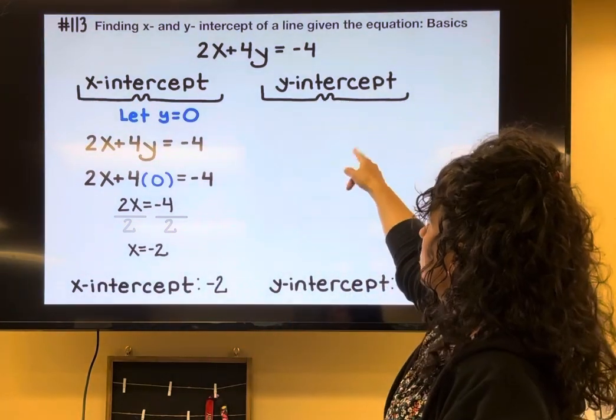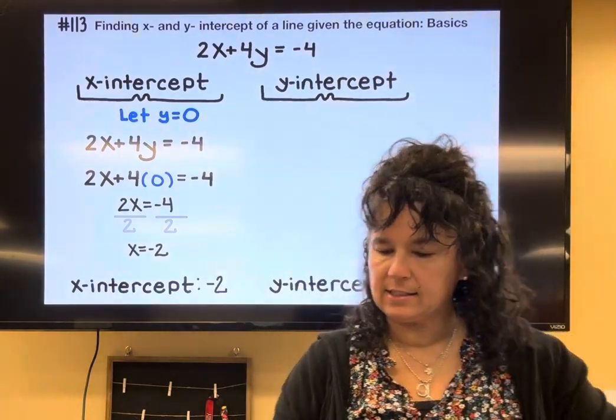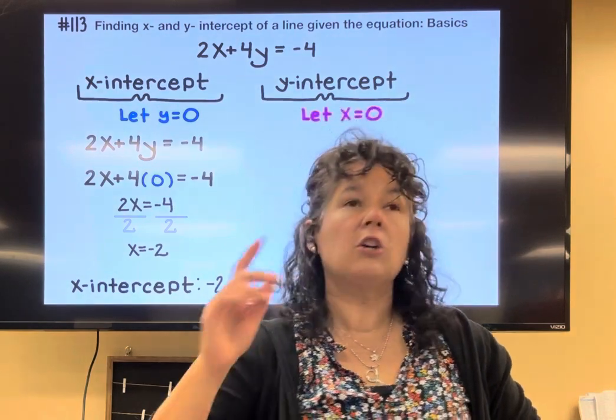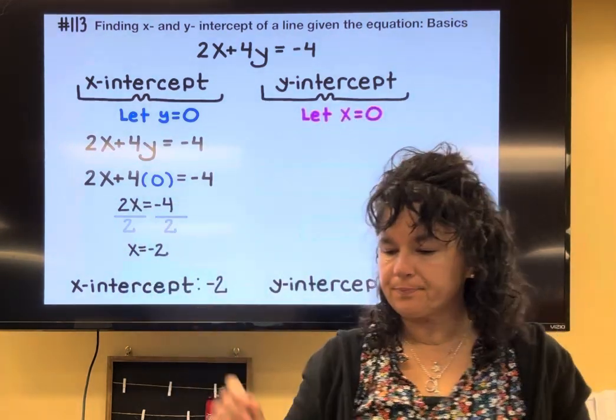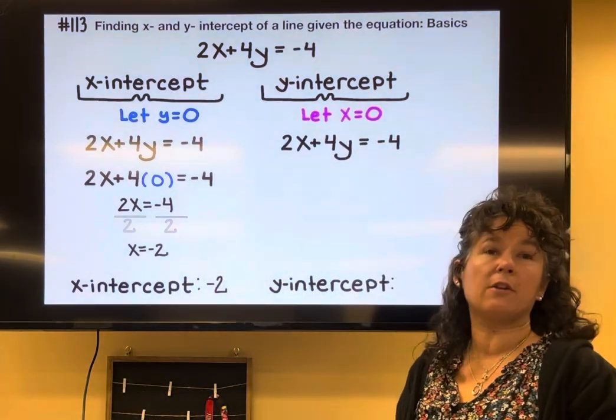Okay, then this one here, y-intercept, every single point, again, on the y-axis, the x is 0, because you don't move right or left. So taking my original equation, 2x plus 4y equals negative 4.